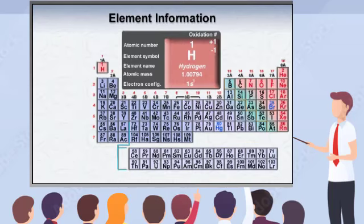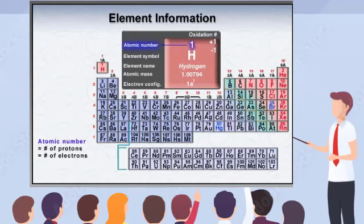Elements are arranged in the periodic table according to increasing atomic numbers, which are typically presented at the top of each element tag. The atomic number tells the number of protons, and since atoms are electrically neutral, the atomic number also equals the number of electrons. The value at the bottom of each tag depicts the average atomic mass.